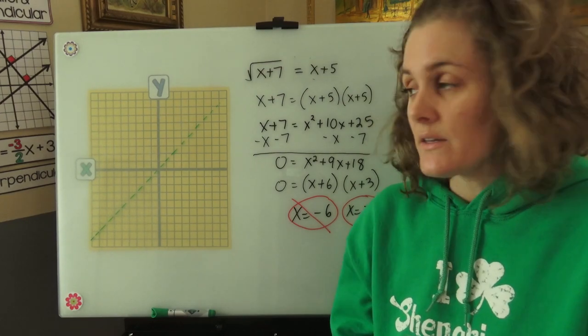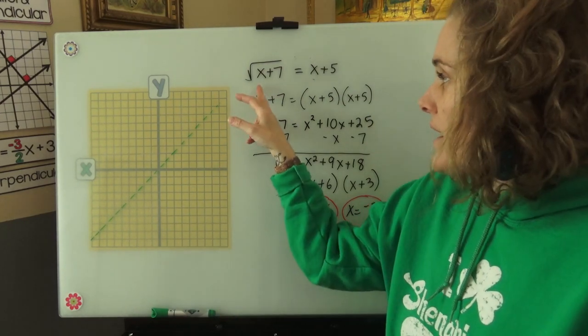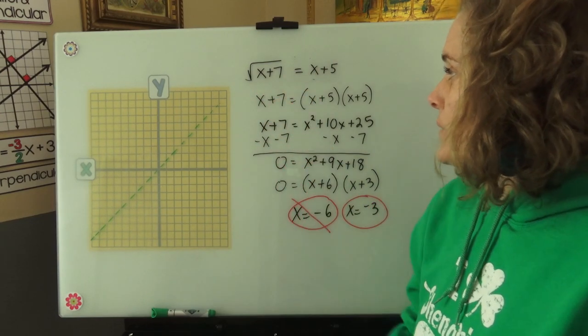Now I want to show you why that is on our graph. I'm going to graph on our grid y equals square root x plus 7 and y equals x plus 5.